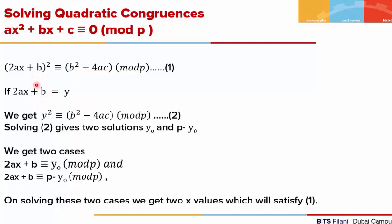If we take 2ax + b as y, we get y² ≡ b² - 4ac mod p. Since this is a quadratic congruence of the form y² ≡ constant mod p, it will have two solutions. If one solution is y₀, then the other solution will be p - y₀, giving rise to two different cases.